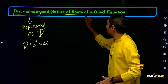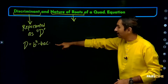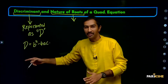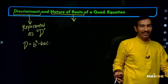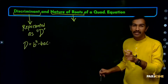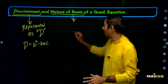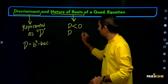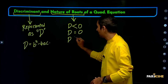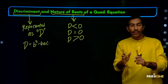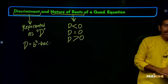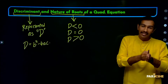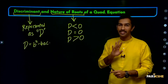The nature of the roots depends on the value of D. There are three conditions. One: D is less than 0. Two: D is greater than 0. Or three: D is exactly equal to 0.